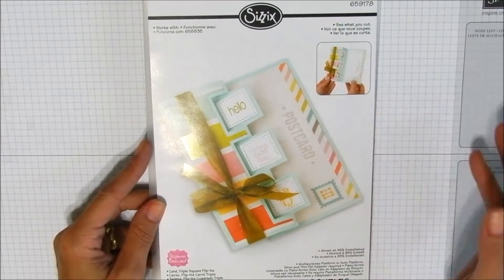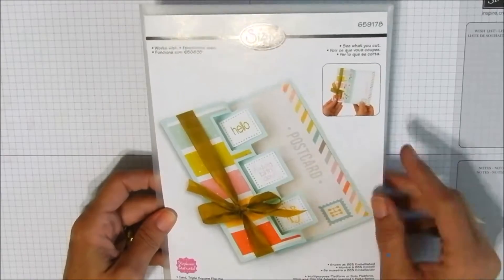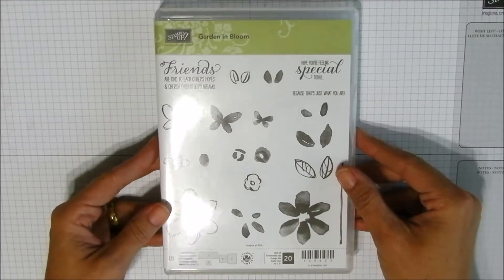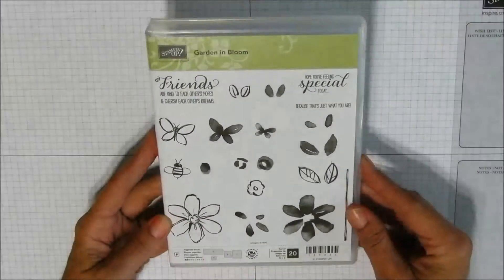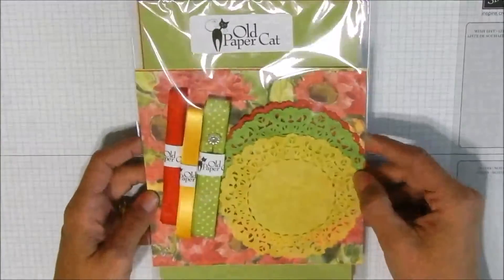This is the Triple Squares Flip It's and I haven't even used it yet, still fresh out of the package. We'll be using that today as well as the Garden in Bloom stamp set, a new one from Stampin' Up from their new annual catalog, and I haven't used this one yet either.